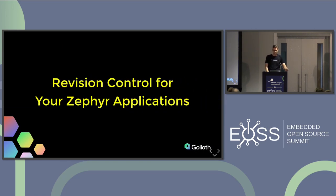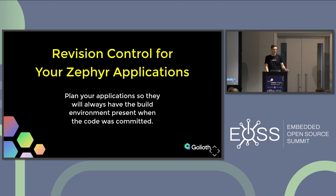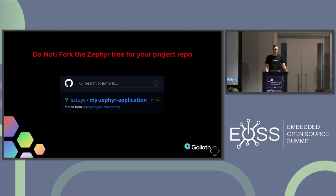Let's actually talk about applications. We want to make sure they're always able to build. One thing you definitely should not do is fork Zephyr and make that your application development repository, because unless you're planning to commit stuff back to Zephyr, there's really no reason to create a fork. The worst version I've actually seen is people committing the entire Zephyr tree to a repository. With a fork, you could at least re-sync; but in general, it's not the right way to do it.